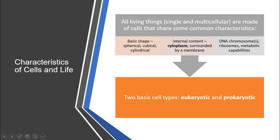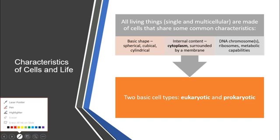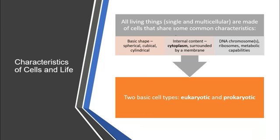Let's start by talking about the characteristics of a living cell. All living things are made up of cells that share some common characteristics. A living thing can be composed of a single cell or multiple cells — we call them single or multicellular organisms. The basic shapes are spherical, cubical, or cylindrical, and the internal content of a cell is composed of cytoplasm surrounded by a membrane.